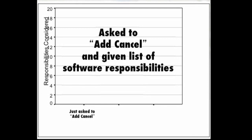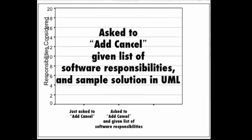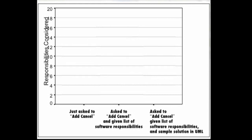We asked the first group to just add cancel. We asked the next group to add cancel, and we gave them our list of responsibilities. We asked the third group to add cancel, gave them our list of responsibilities, and a sample solution in UML diagrams. We found that if you just asked them to add cancel, trained software engineers, on average, consider only three of the 21 necessary responsibilities.